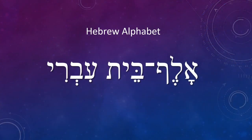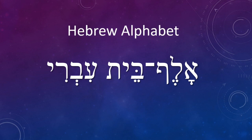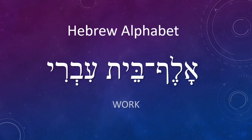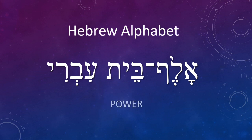Without going into the full extraction letter by letter, let me present a simplified interpretation of the phrase Hebrew Alphabet — the Aleph Bayit Ivri. We are to build as one so as to cross over through the Father's language, which gives us power through the work and deed of our hands, to become the strong leader of our house and temple. This is the language of sovereignty that assists us to cross over from being subjugated to having the power to become a ruler over our own temple.